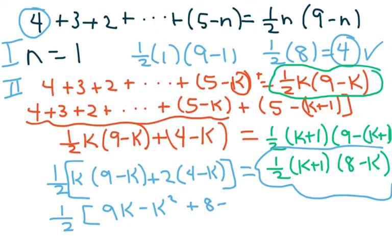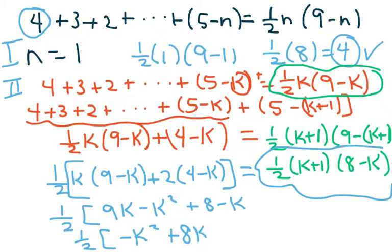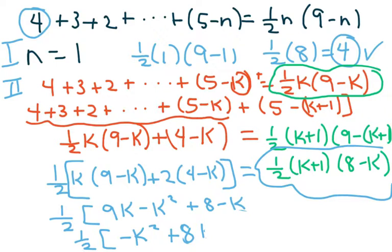Distributing and simplifying, we get one-half times (negative k squared plus eight k plus eight minus two k). Sorry — that's a negative 2k, not just k. So it becomes negative k squared plus seven k plus eight.